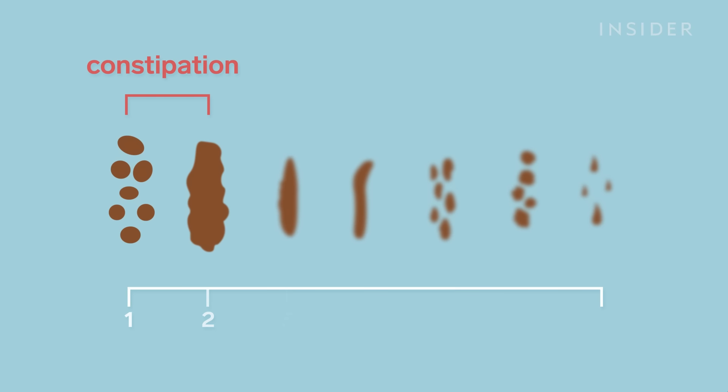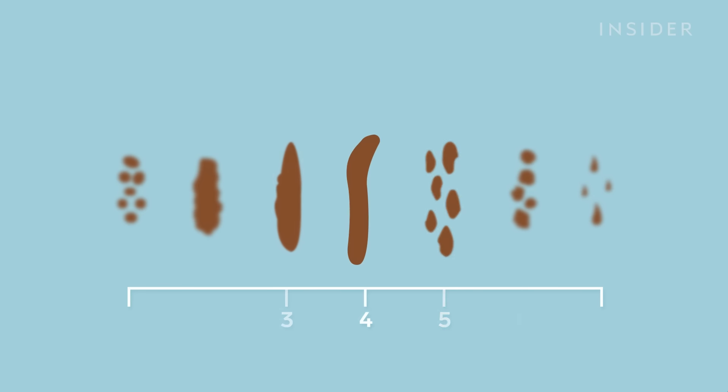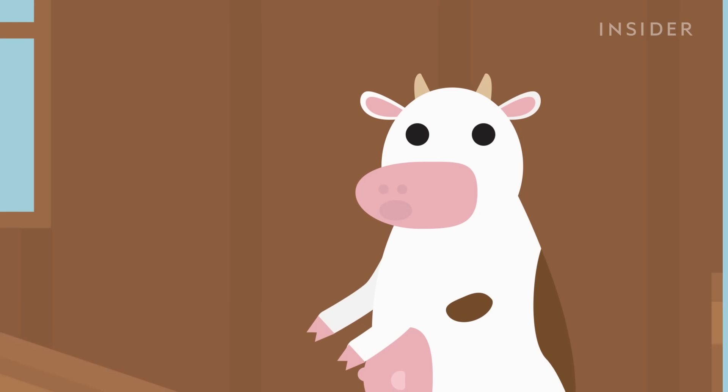Anything before indicates constipation. Anything after gets closer to diarrhea. Depending on where you land on the scale, there are a number of things you can do to get that coveted smooth snake. Let's start with short-term solutions.